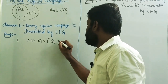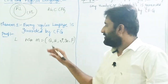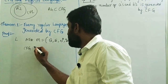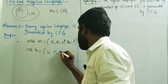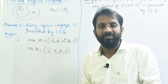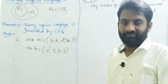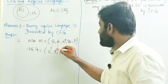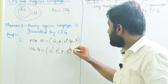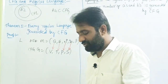The machine M equals (Q, Σ, δ, Q₀, F). For the same language, there exists a context-free grammar G equals (V, T, P, S). To convert the machine into the grammar: all states in the machine are treated as variables, input symbols as terminals, the initial state as the starting symbol, and transitions are converted into productions.